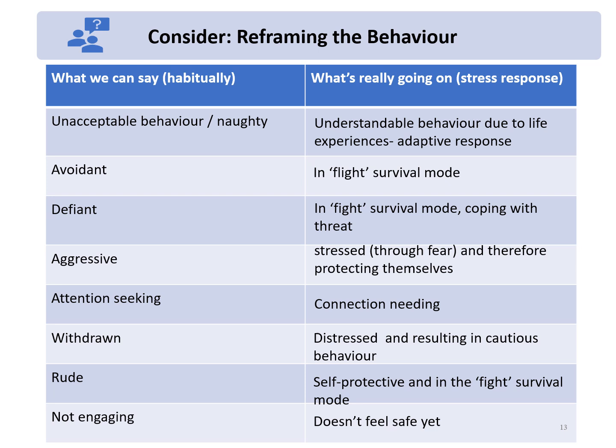Avoidant behaviour means the child or young person is in flight survival mode. Defiant behaviour means the child is in fight survival mode, coping with a threat. Aggressive or violent behaviour is a stress response through fear — protecting themselves. Attention-seeking we describe as attachment or connection-needing. Withdrawn behaviour is distress resulting in cautious behaviour. Rude behaviour or a smirk is a form of self-protection. And not engaging means the child or young person doesn't feel safe yet.